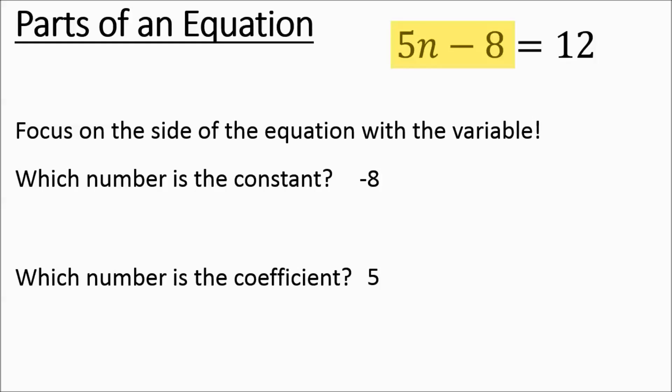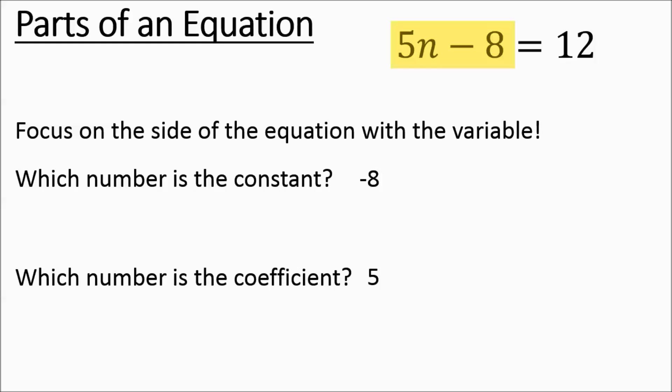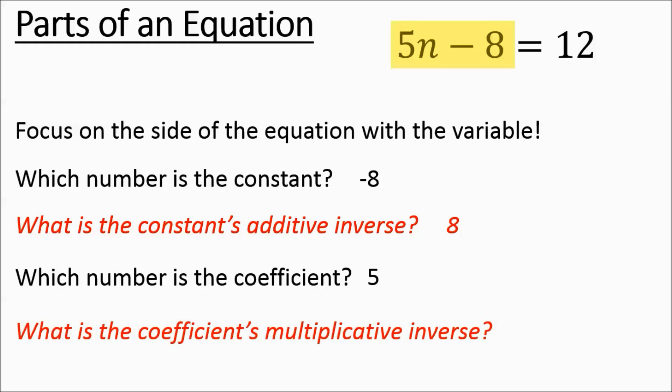Now we also want to think about the constant's additive inverse. What is the constant's additive inverse? That's going to be 8 — it's the opposite. And then for the coefficient, we want to worry about the multiplicative inverse. For 5, that would be 1 fifth.